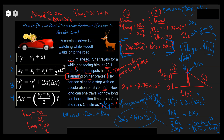Now we can use the total distance equation: delta x total equals delta x1 plus delta x2. We know the total is 80.0 meters and delta x2 is 53.8 meters. So delta x1 equals 80.0 minus 53.8, which gives us delta x1 equal to 26.2 meters.